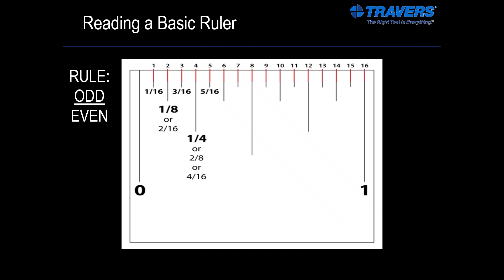Next is the fifth line — that's five sixteenths, so we're good, it's odd over even. Next is the sixth line or six sixteenths — that's even over even, so we need to do the math. Six divided by two equals three, sixteen divided by two equals eight. And we're odd over even, so three eighths — we don't have to go any farther. Next one is seven sixteenths — already at odd over even, so we're fine.